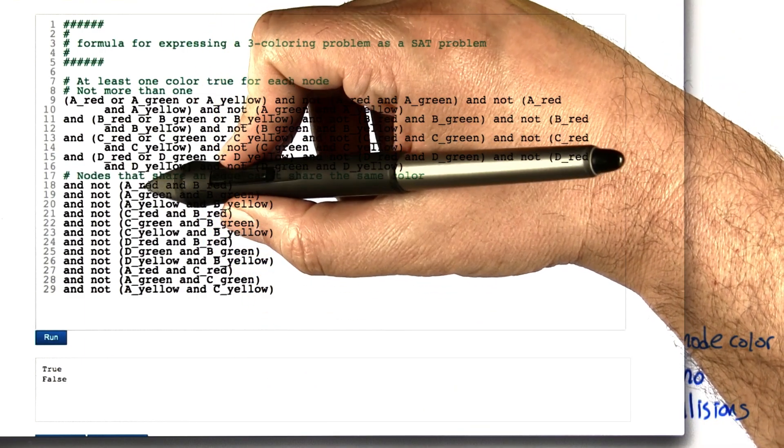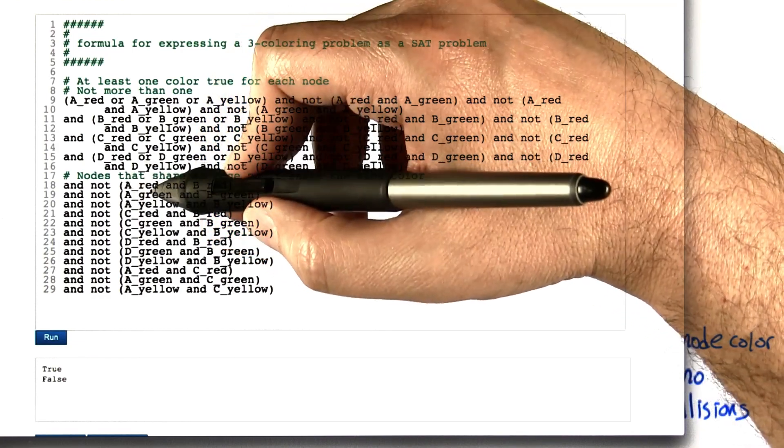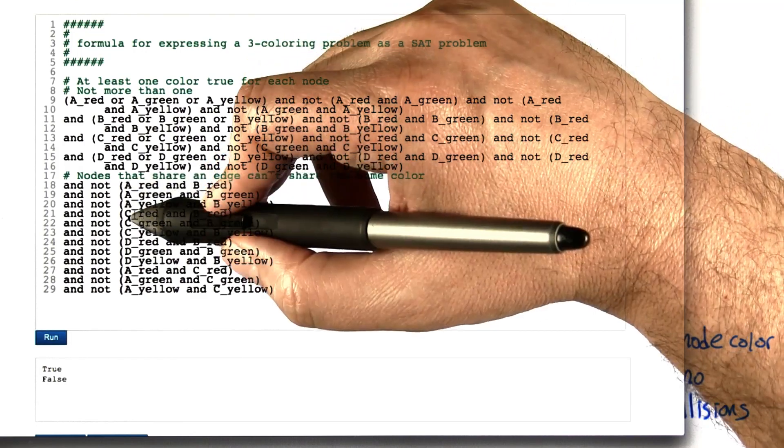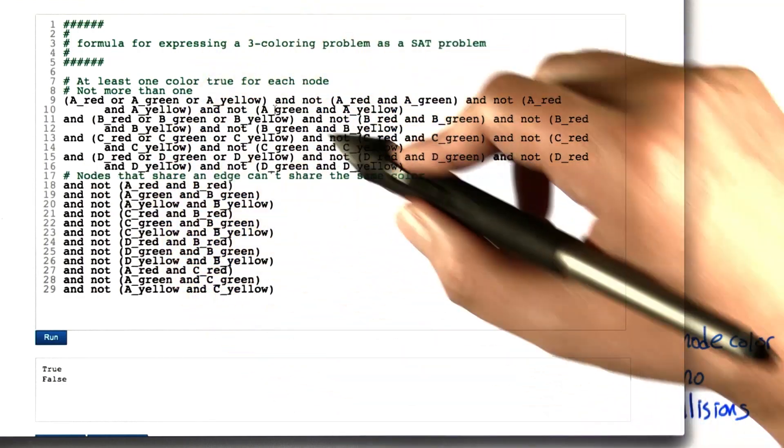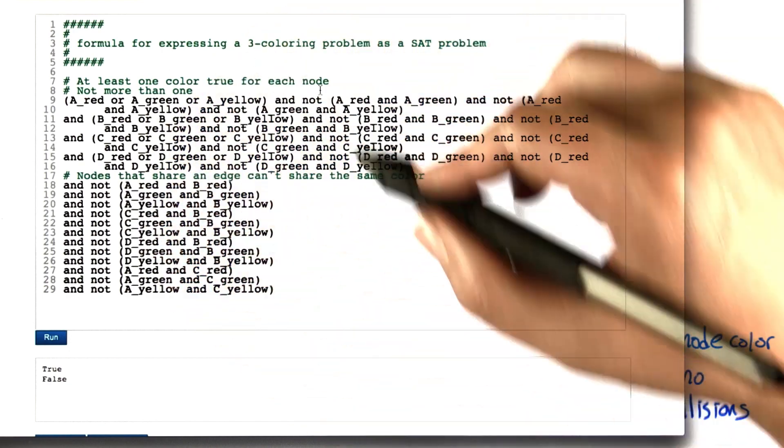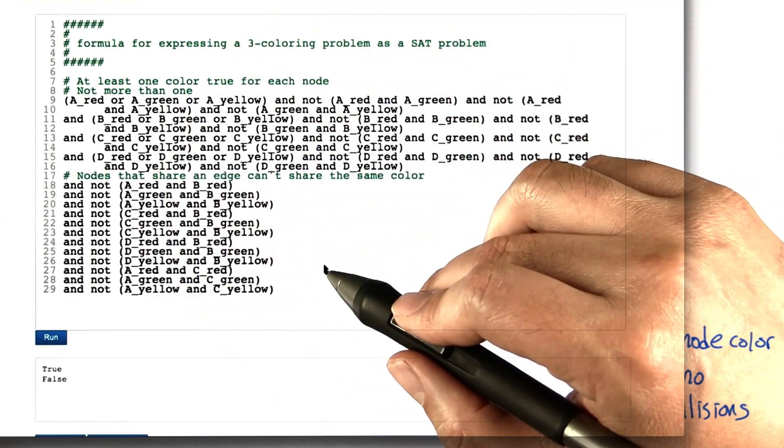So for each of the edges in the graph we have three of these statements to rule out all possible color matchings. So there's three of these for one edge, two edge, three edge. There's four edges in the graph so we have four blocks of these. And this formula now as a whole has a satisfying assignment, has an assignment that makes this whole expression true if and only if there's a coloring, a three coloring of that graph.